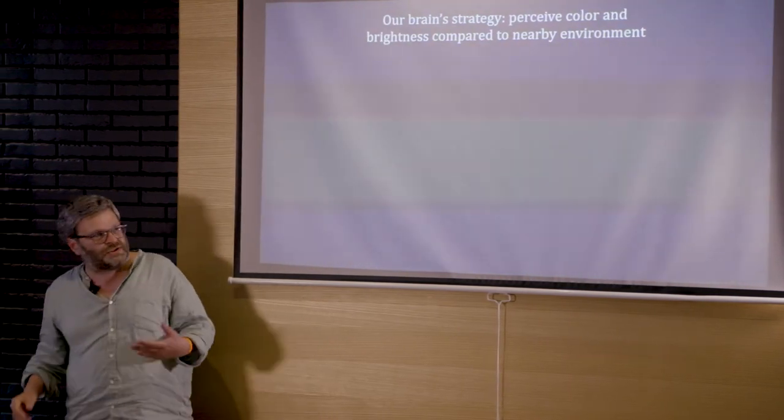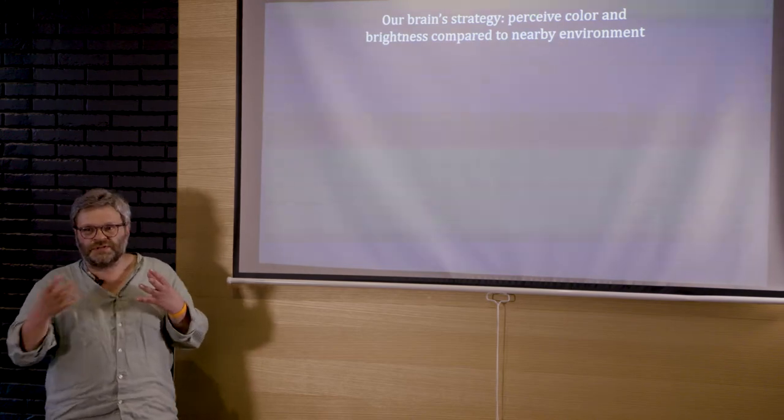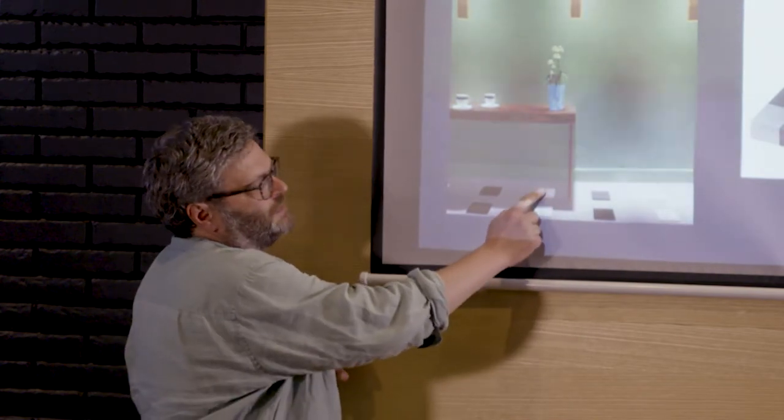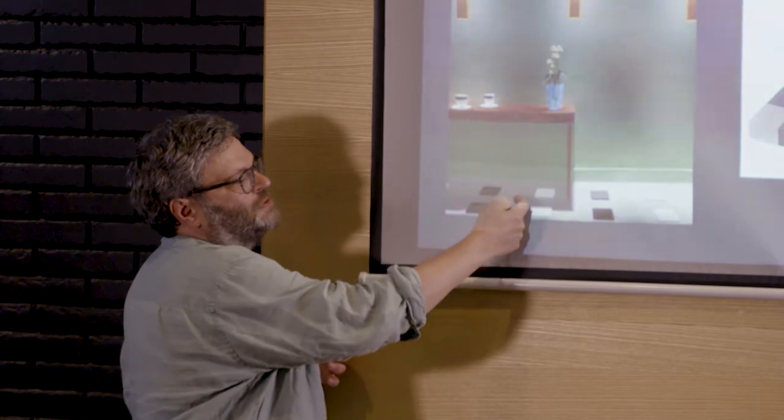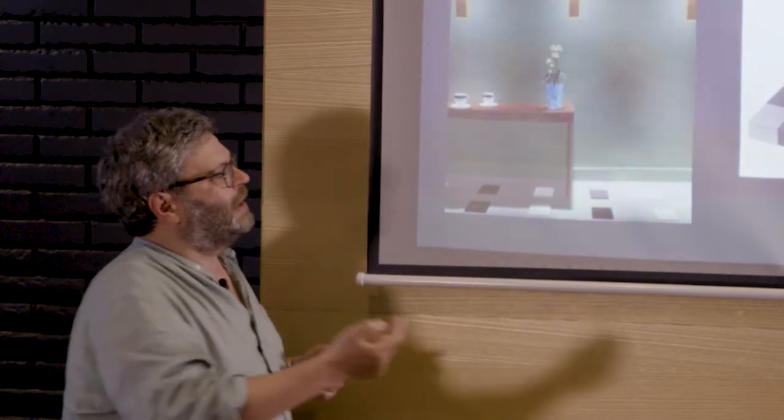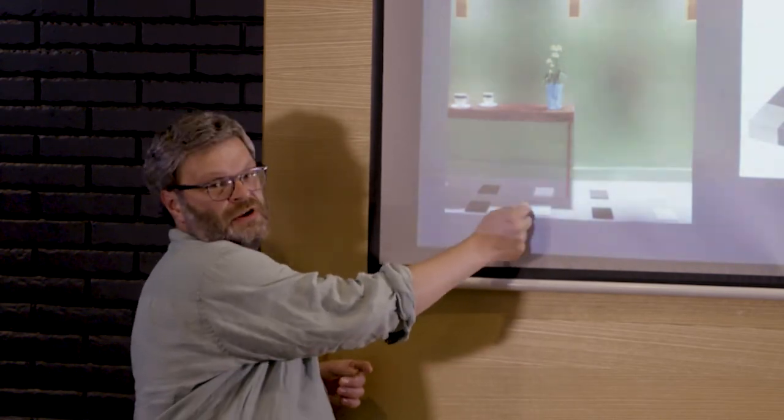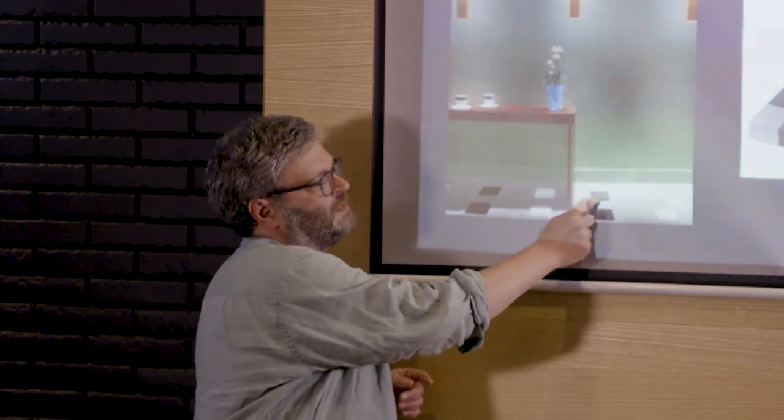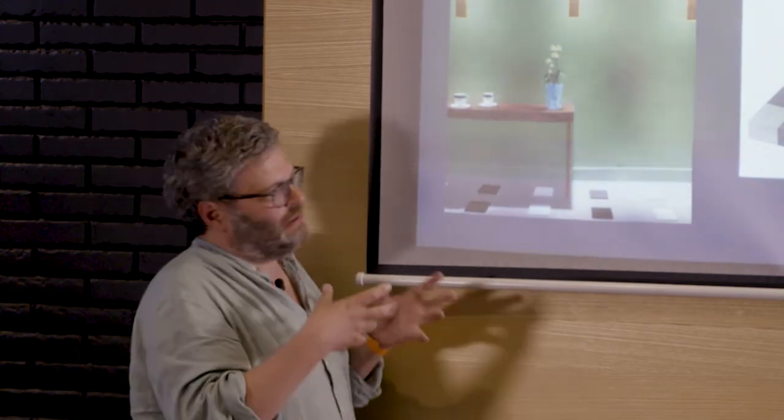And so one strategy, and I'm going to describe this in a very general way, is to perceive color and brightness by comparing an object to its nearby spatial environment. In other words, you perceive stuff relative to other stuff. You perceive the brightness of this patch here relative to the dark area here. And because it's brighter than the dark area around here, you perceive it as white. And you perceive this also relative to its environment. And because it's darker than its environment, you perceive it as dark. It's actually a lot more complicated than that, but that's sort of the general idea.